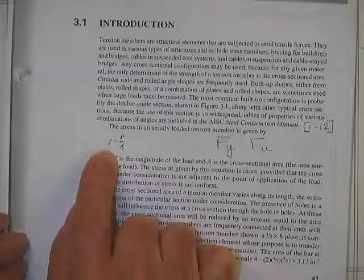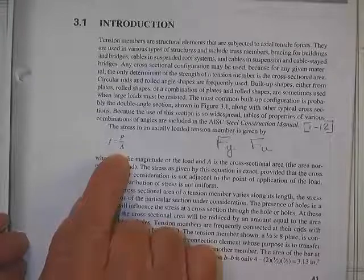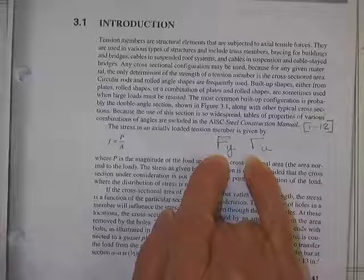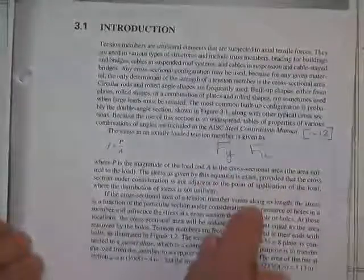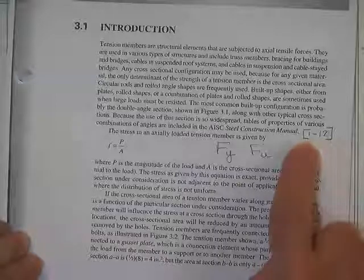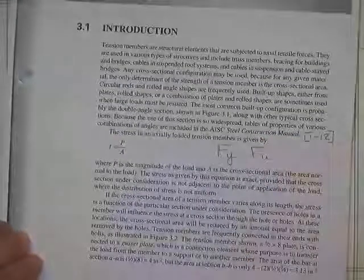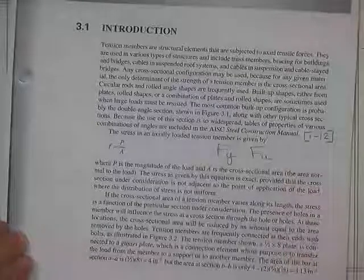First, a reminder that we're no longer using the symbol sigma. Using little f to represent the real stress in the member that you're working with. We'll be using capital symbols F for some kind of special stress, like a yield stress for the metal or an ultimate stress for the metal. Here's a typical thing. Combinations of angles are included, 1-12. That's where you'll find angles inside of the AISC steel construction manual.